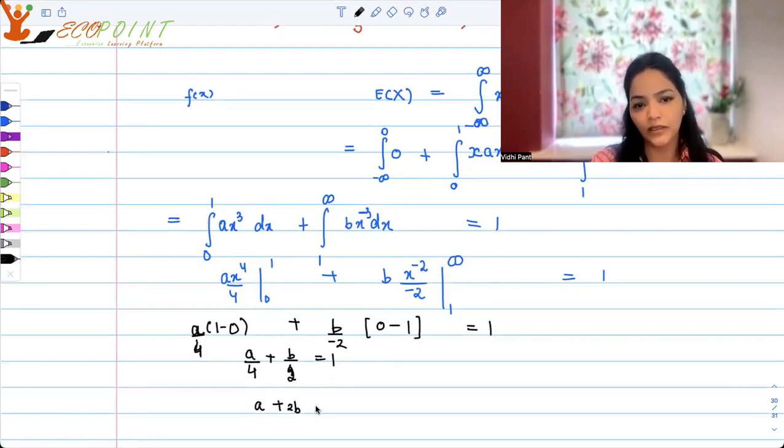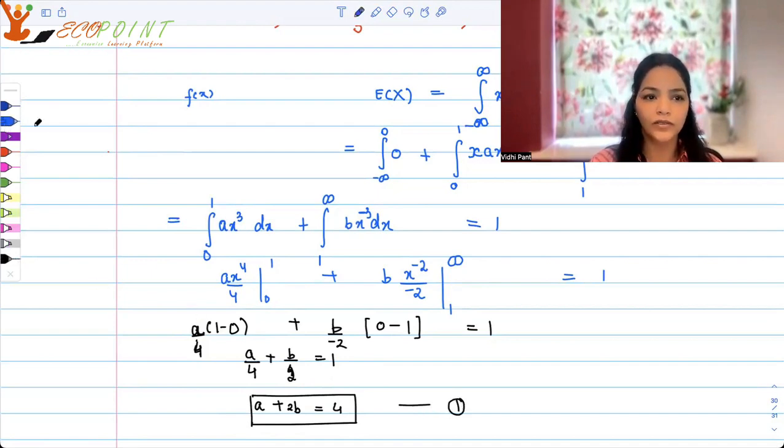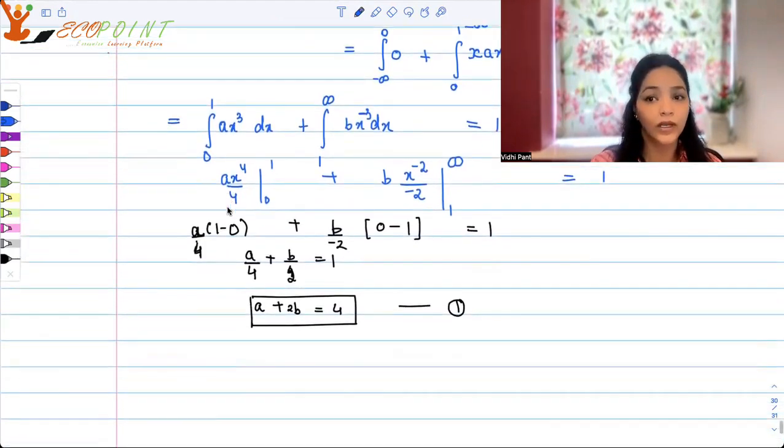So this is an equation that you are getting in two variables a and b. A plus 2b equals to 4. Let's put it as equation 1. Now if I have just one equation in two variables, I can't solve it for a unique value. This could be satisfied by infinitely many. But what we do know about probability is that the total probability is always equal to 1.